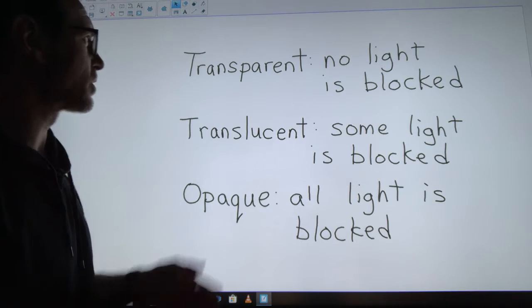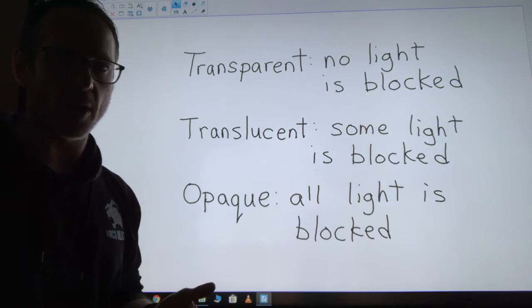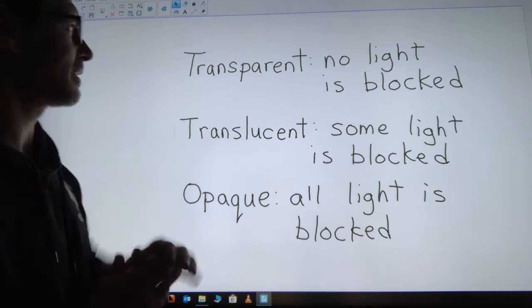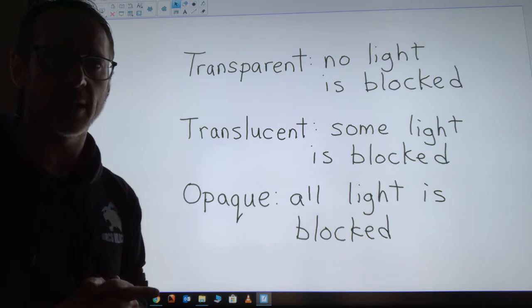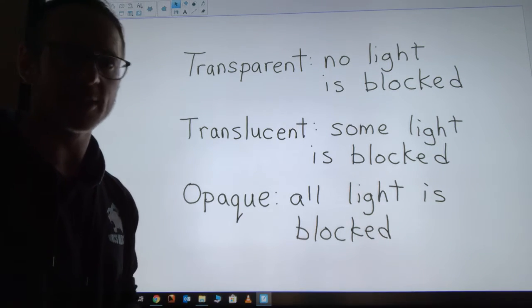If the light goes all the way through and isn't blocked at all, then we say that material is transparent. It's something that's not going to block any light, so we can see right through it—something like a window.